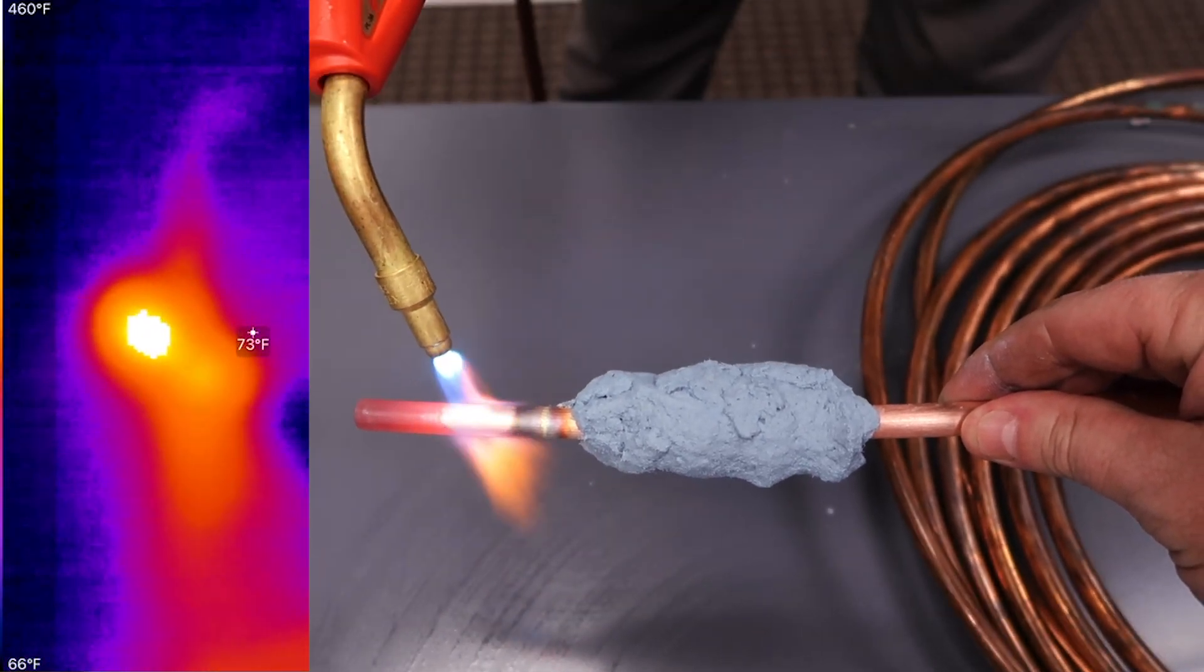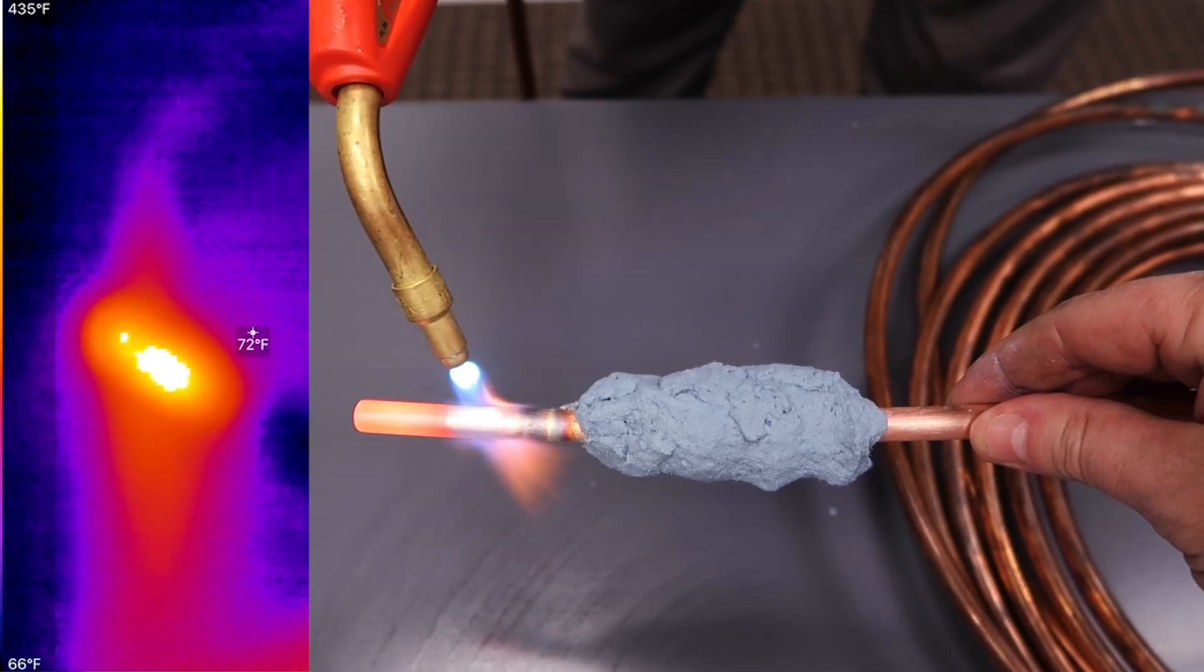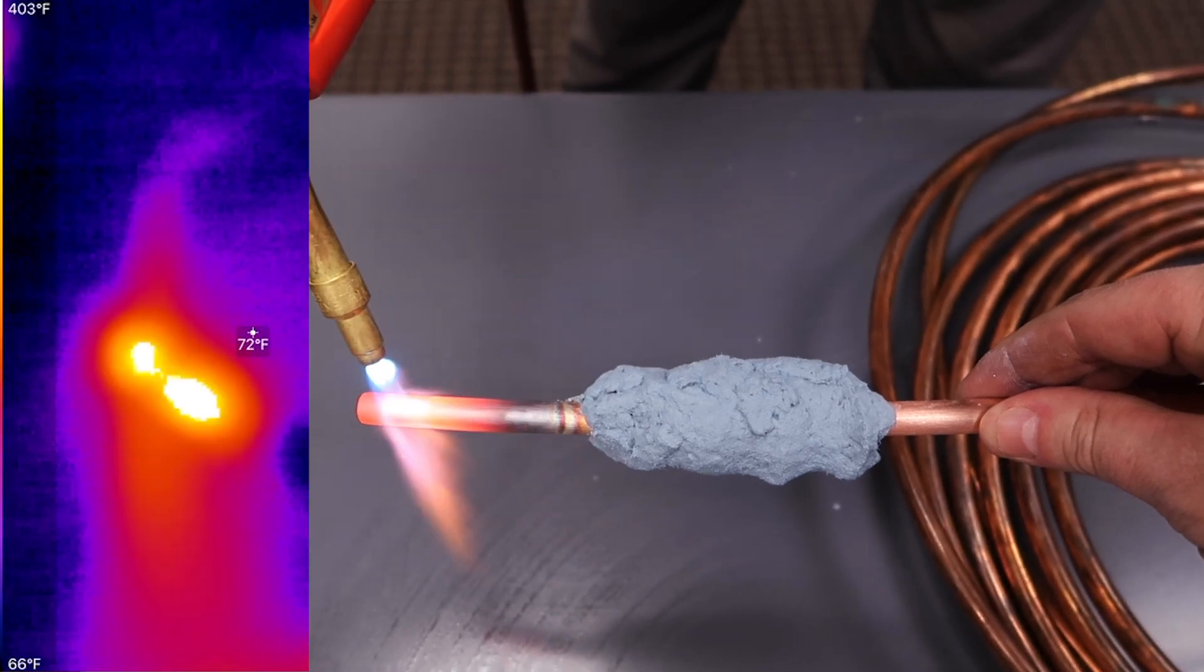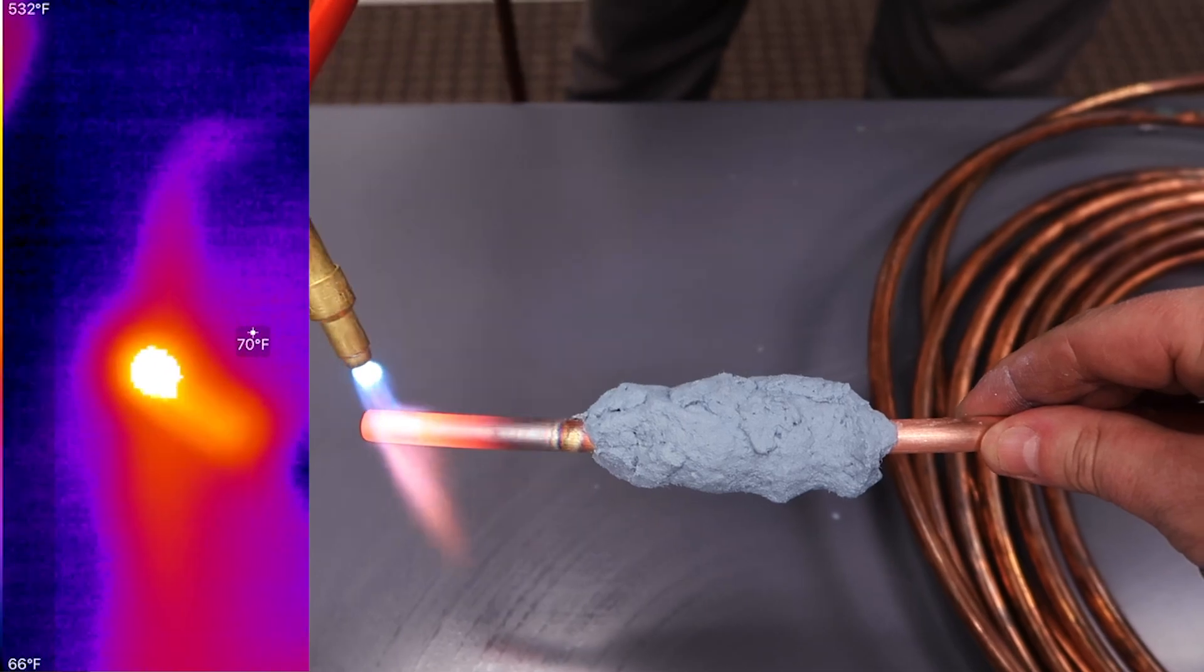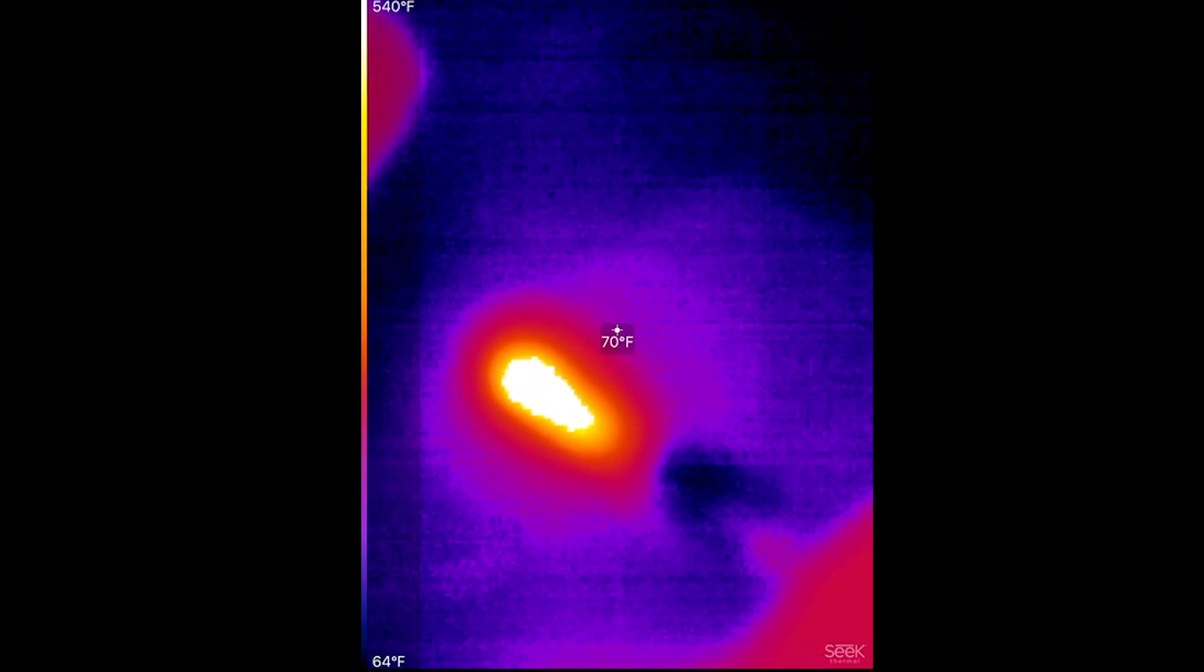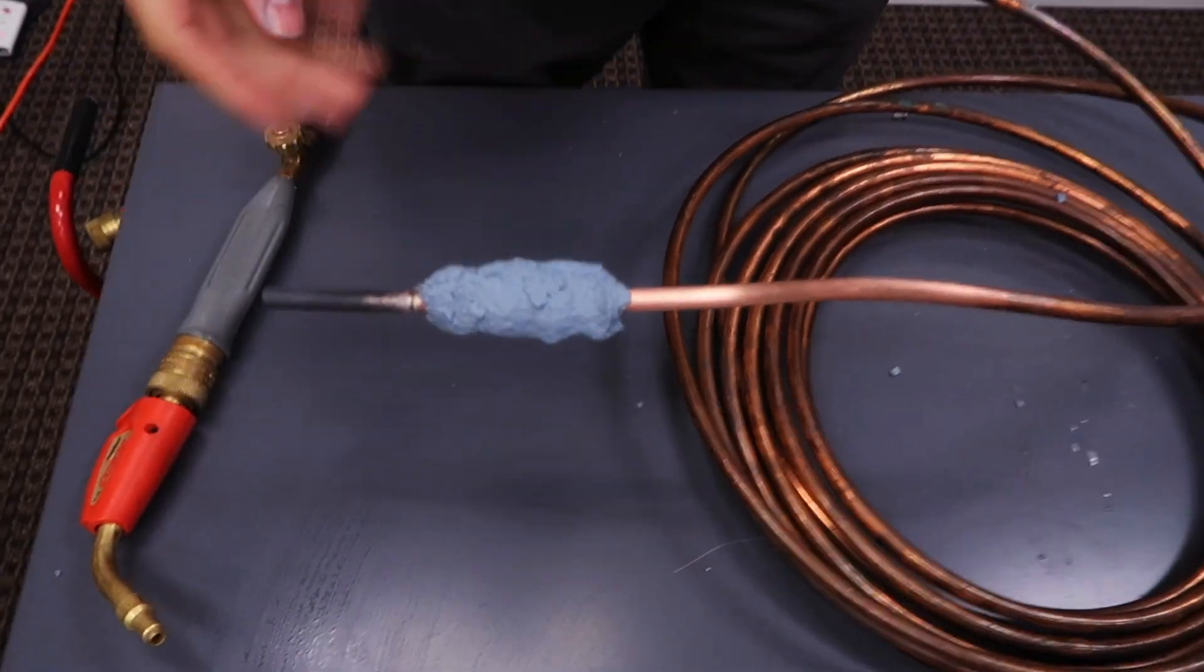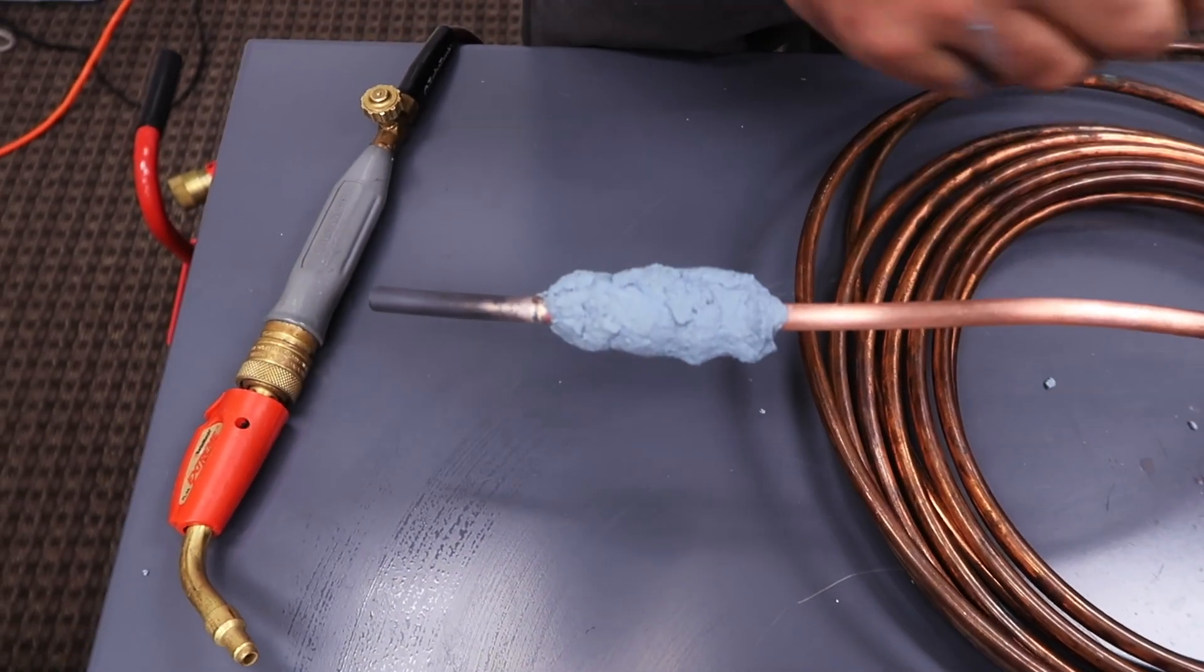So this will protect any type of TXVs that you're working with, or any type of metering device or valves that you're working near to make sure that that heat does not transfer over to those valves to destroy them. Again, this is to protect the areas that you're working in and making sure the heat is concentrated in one area only.